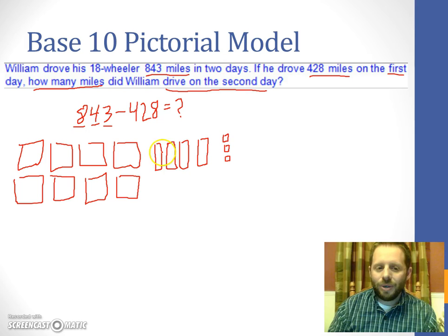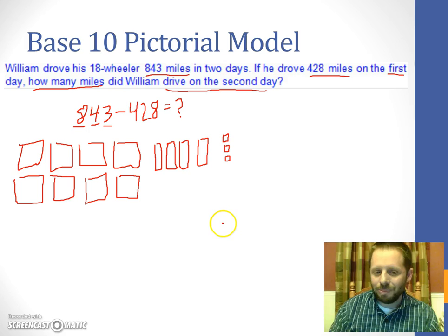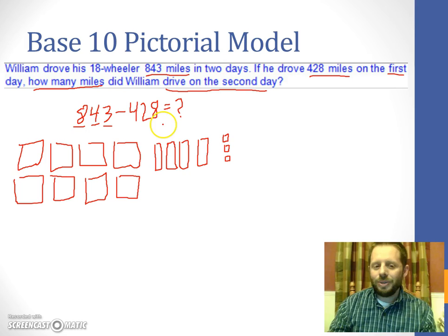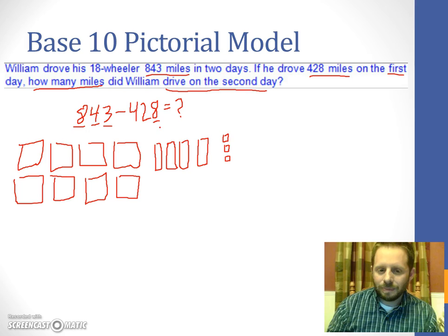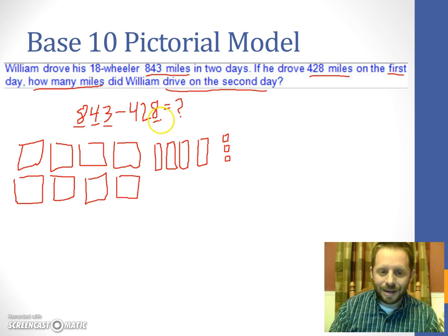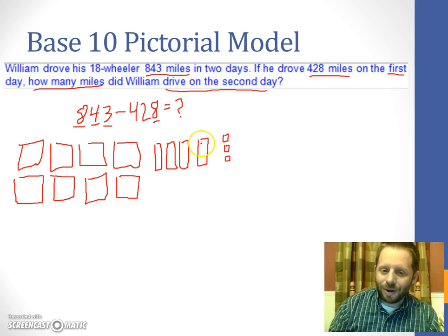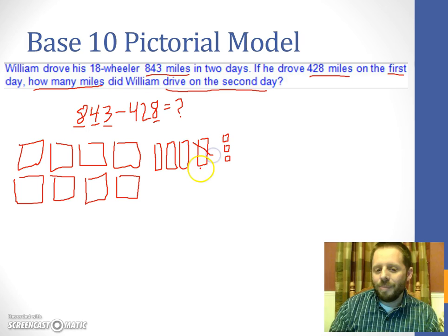Now here's where things get a little different. Because we're subtracting 428, we don't need to add another 428 of our base 10 blocks. We're actually going to remove 428. So if we're removing 428, you want to start with the ones place. Here we want to remove 8 ones. Well, that's a little difficult. There's only 3 ones here to remove, so I can't take away 8 of them. So what that means is, I'm going to have to borrow one of these longs that represent 10 units, and we are going to move it over here and make 10 unit blocks out of it. So we have removed one of our longs, and we broke it into 10 pieces, 10 unit pieces.